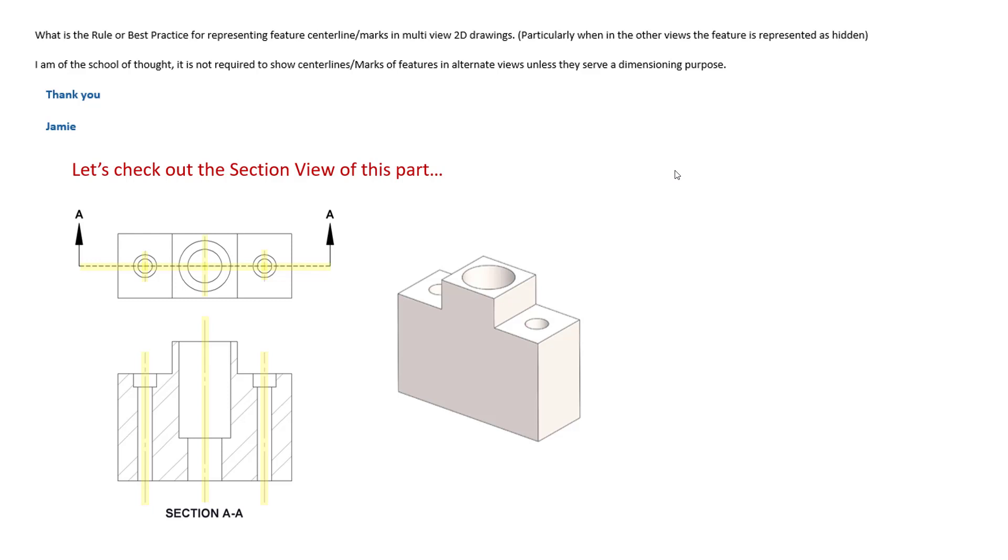So Jamie asked, what is the rule or best practice for representing feature centerline marks on multi-view 2D drawings, particularly when in the other views the feature is represented as hidden. So maybe there's some hidden examples here, or you have some geometry internally in the part that may be difficult to centerline.